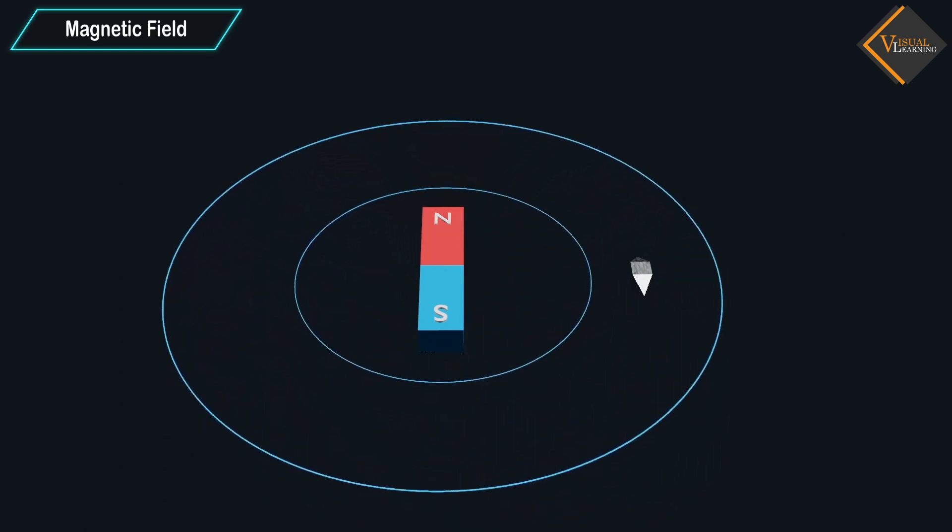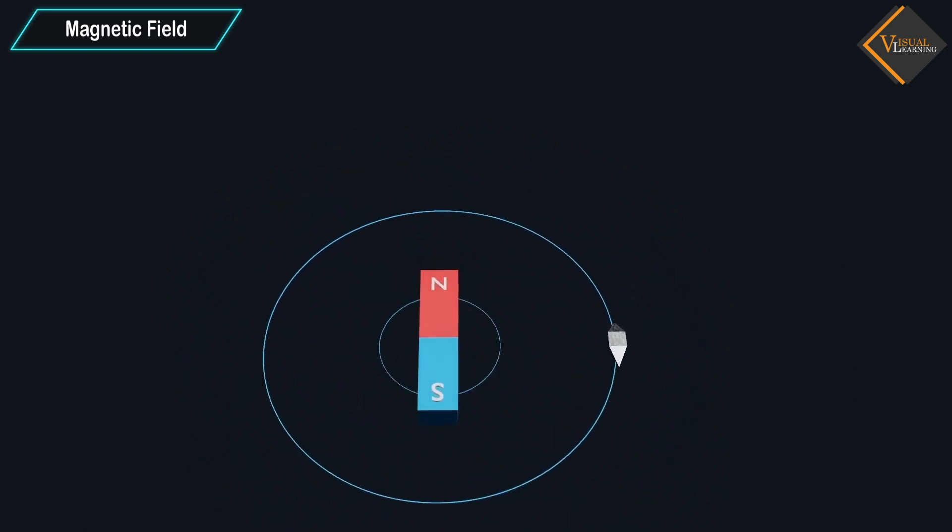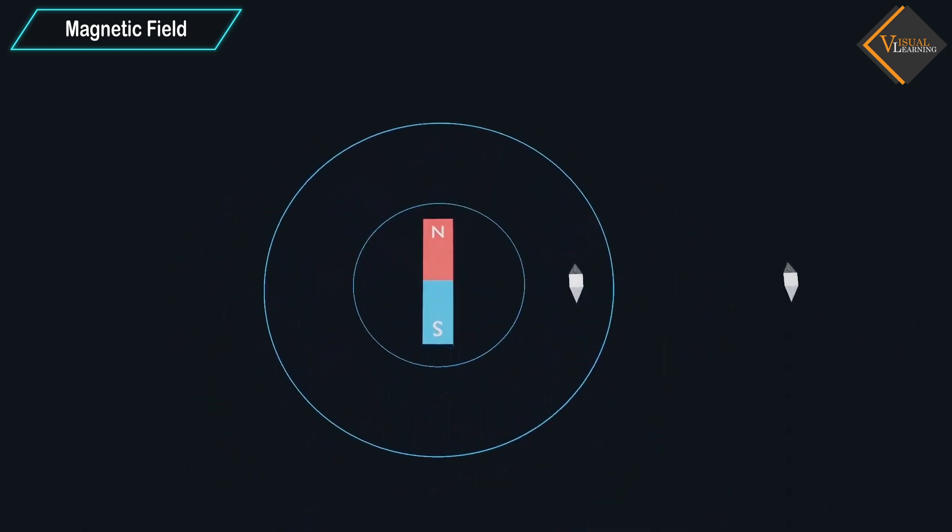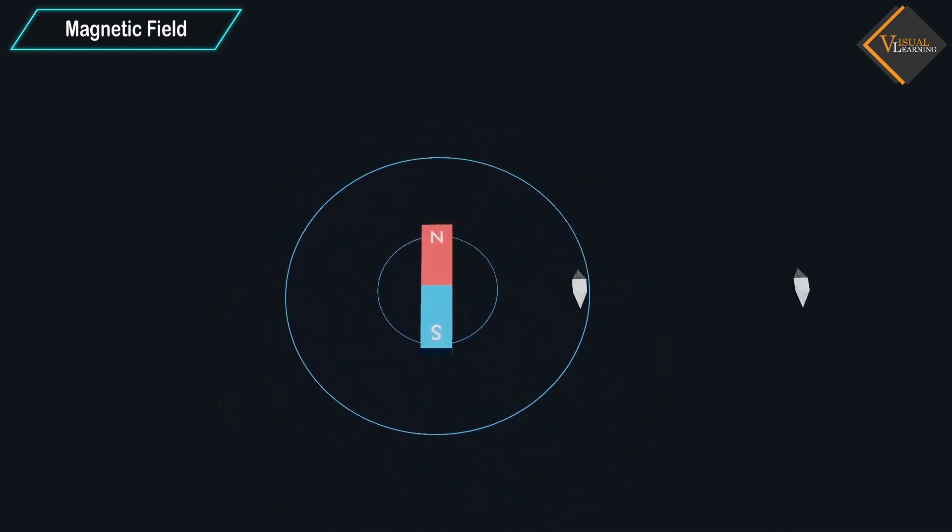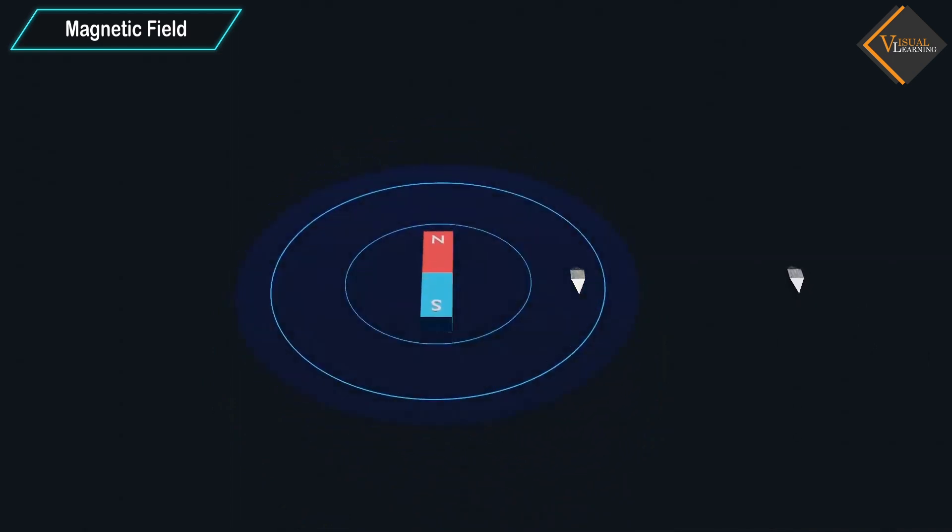This happens because magnetic force acts on the piece of iron. But when we put the iron piece far away from the bar magnet, nothing happens. It shows magnetic force can act only in a certain region.